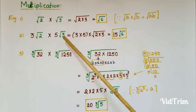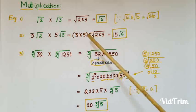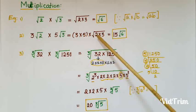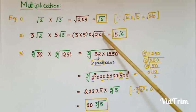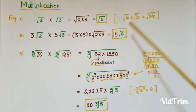For 3√2 × 5√3, first separate the rational and irrational parts: 3 × 5 multiplied by √2 × √3. That gives 15 × √6, so the answer is 15√6.